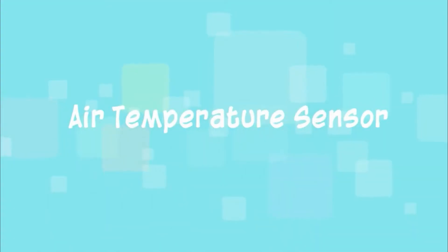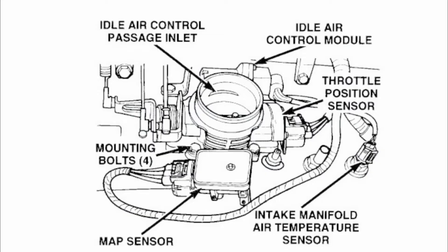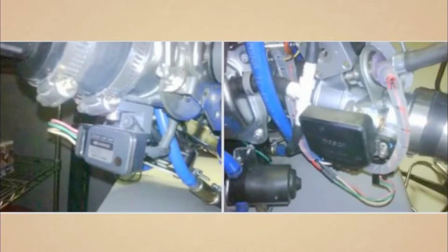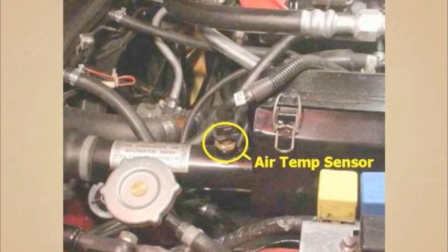Air temperature sensor monitors the temperature of air entering into the engine. The ECM needs this information to estimate the air density and prepare a balanced air mixture. It is usually located in the air filter box or the pipe that is attached to the air filter box.